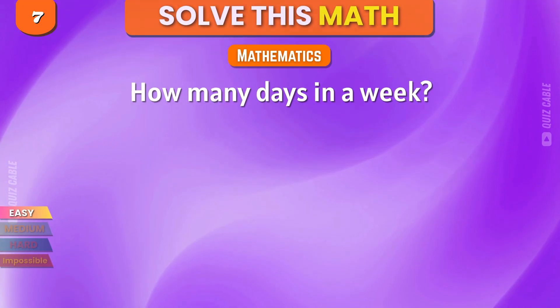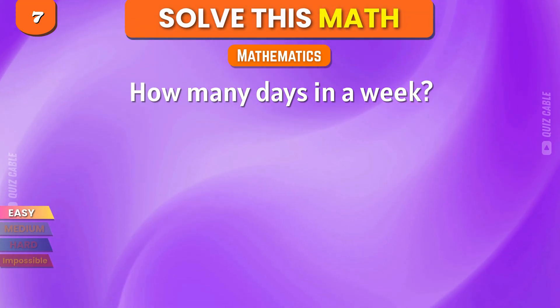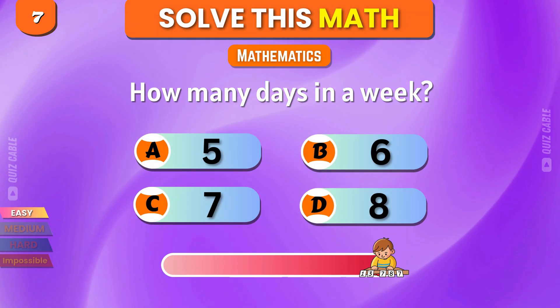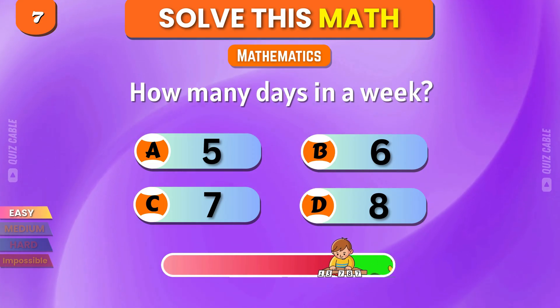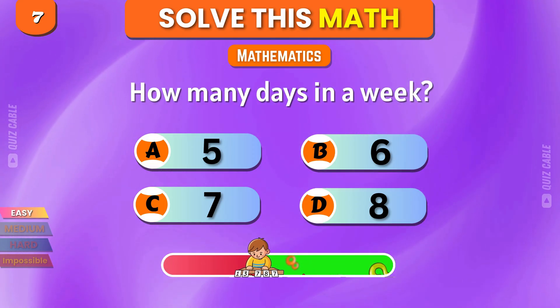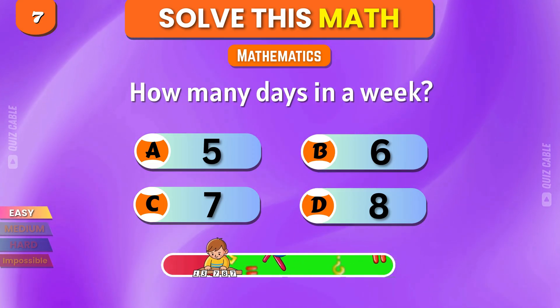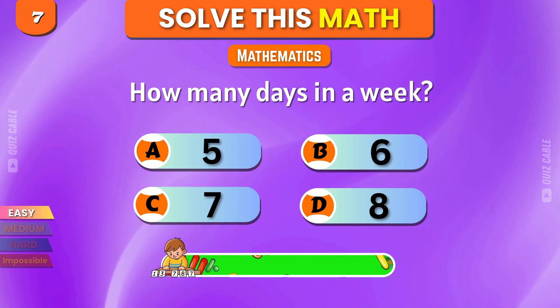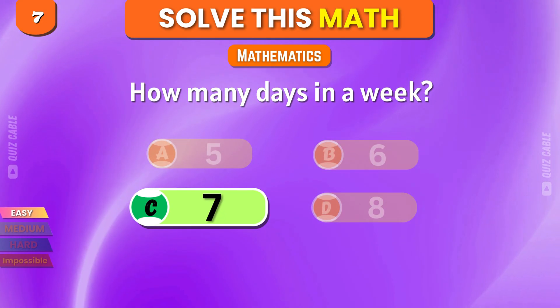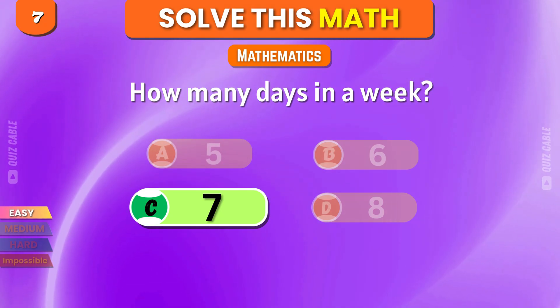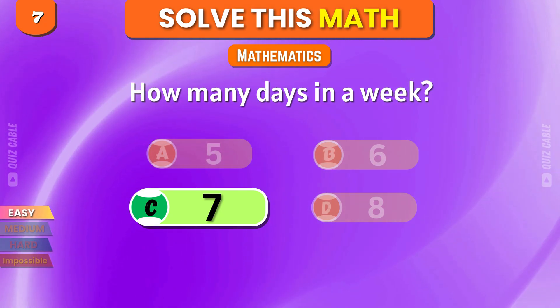How many days are in a week? 5, 6, 7, 8. Correct. Perfect.